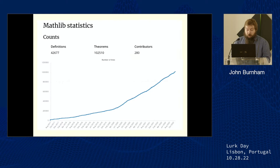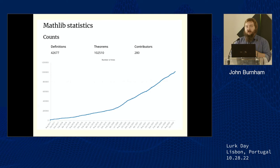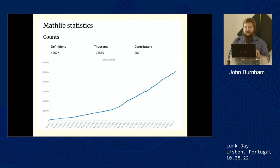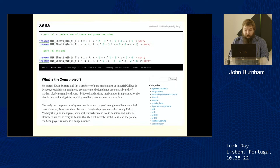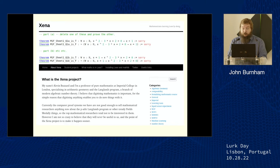MathLib is the Lean mathematics library — think of it as the corpus of all formalized math that humanity has created. It's got hundreds of contributors, hundreds of thousands of theorems, and over a million lines of code. It's a big project, growing like crazy. Kevin Buzzard, a mathematician at Imperial College, has this really exciting Xena project to put an entire undergraduate math curriculum in Lean. He has some great talks about this that I encourage everyone to look up.